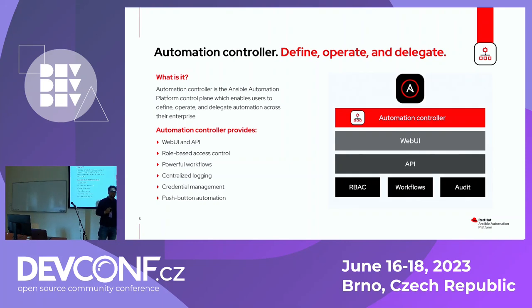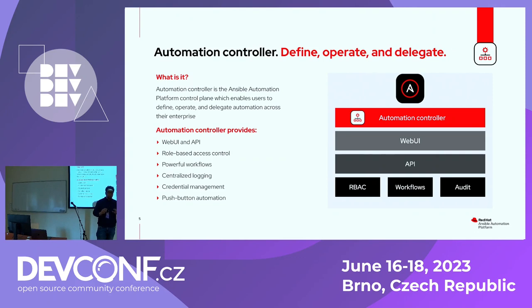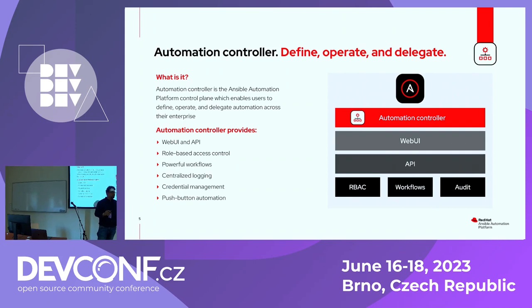Now let's dig deep into some basics of the automation controller. It's a web UI-based tool where you perform all operations — defining playbooks — and it comes with a role-based access mechanism, so you can give whatever role to whatever object very easily. It also has an API, so if you want to call an API to create or modify any object, that's possible. Plus, it provides centralized auditing logs — who did what — which is really important in IT.